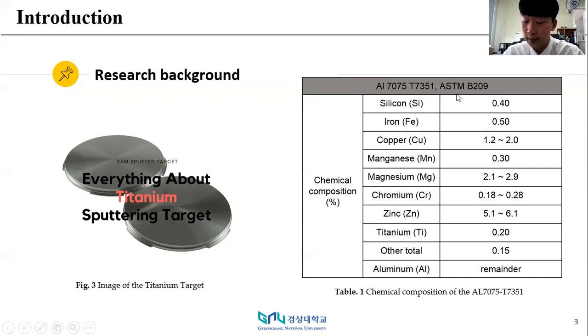Table 1 is chemical composition of the aluminum 7075 T7351. This was implemented according to the ASTM B209 standard.